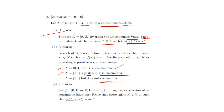Moving to the last segment of the question: f₁, f₂, ..., fₘ map the closed interval [0,1] to [0,1] — a collection of m continuous functions. Prove that there exists x* belonging to the closed interval [0,1] such that the summation Σfᵢ(x*) = m·x*.